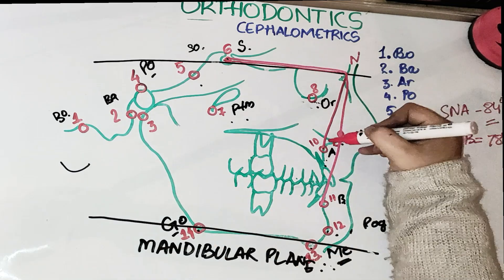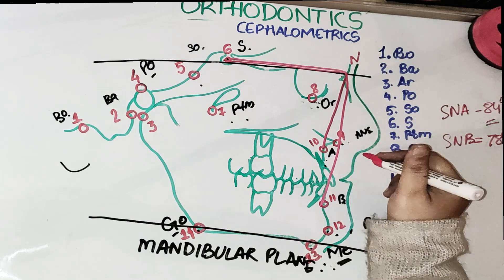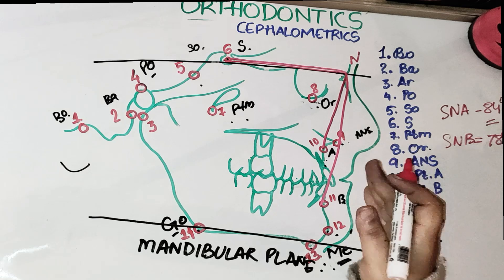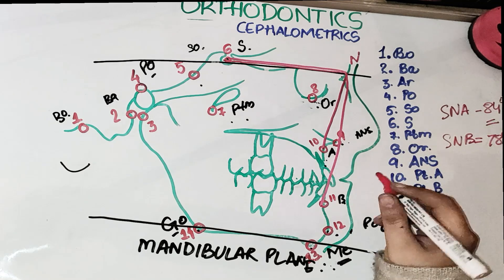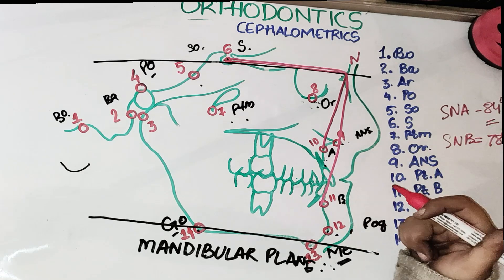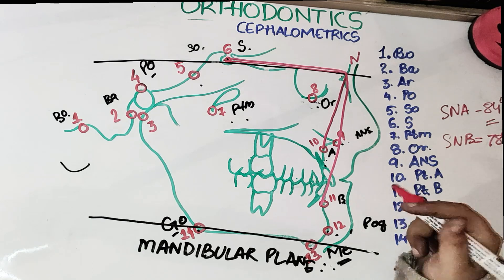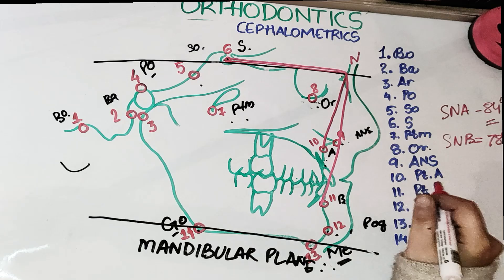The ANB angle is supposed to be 2 to 4 degrees for Class 1 molar occlusion. I hope you enjoyed the video. If you have any questions about cephalometrics, leave them in the comments below and give it a thumbs up if you like the video. Make sure to subscribe to our channel if you haven't done it yet, and I'll see you next time.